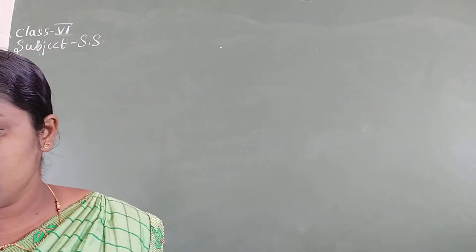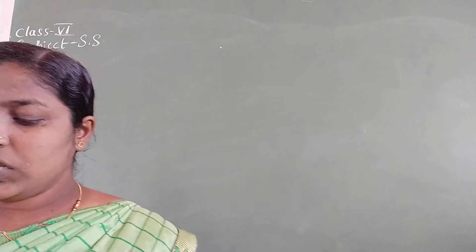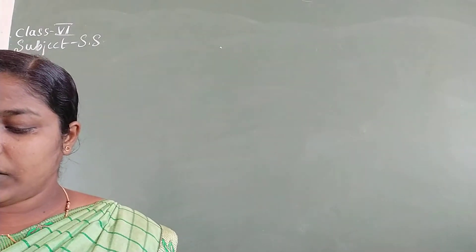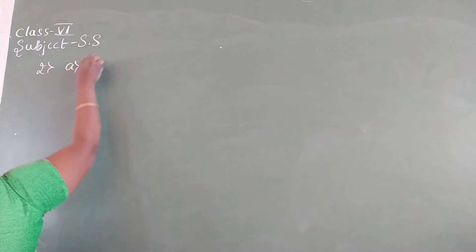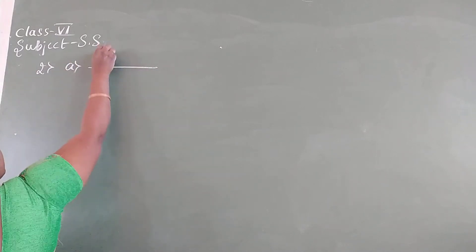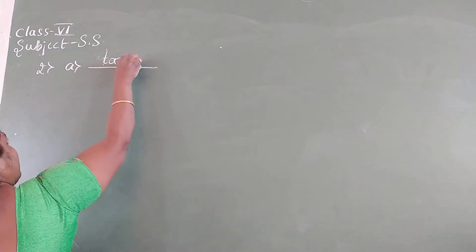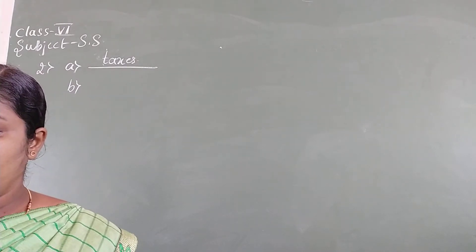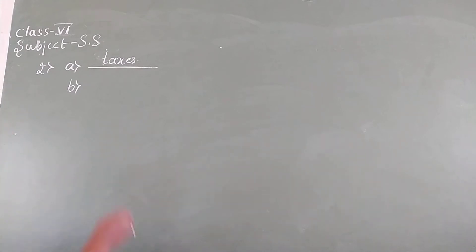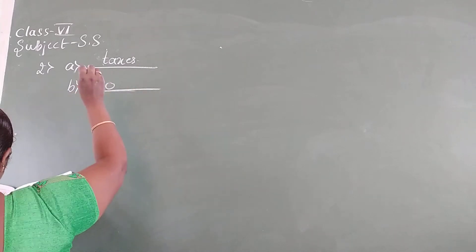Then second one. Complete the following sentences. A. Officials collected blank from the area under the direct control of the ruler. Answer is taxes. Officials collected taxes from the area under the direct control of the ruler.